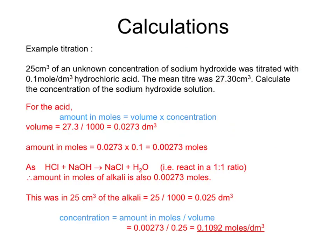Now let's use this knowledge for a titration calculation. 25 cm³ of an unknown concentration of sodium hydroxide was titrated with 0.1 mol/dm³ hydrochloric acid. The mean titre was 27.3 cm³. We know more about the acid: volume is 27.3 cm³, concentration is 0.1 mol/dm³. Converting volume: 27.3 ÷ 1000 = 0.0273 dm³. Moles of HCl = 0.0273 × 0.1 = 0.00273 mol.